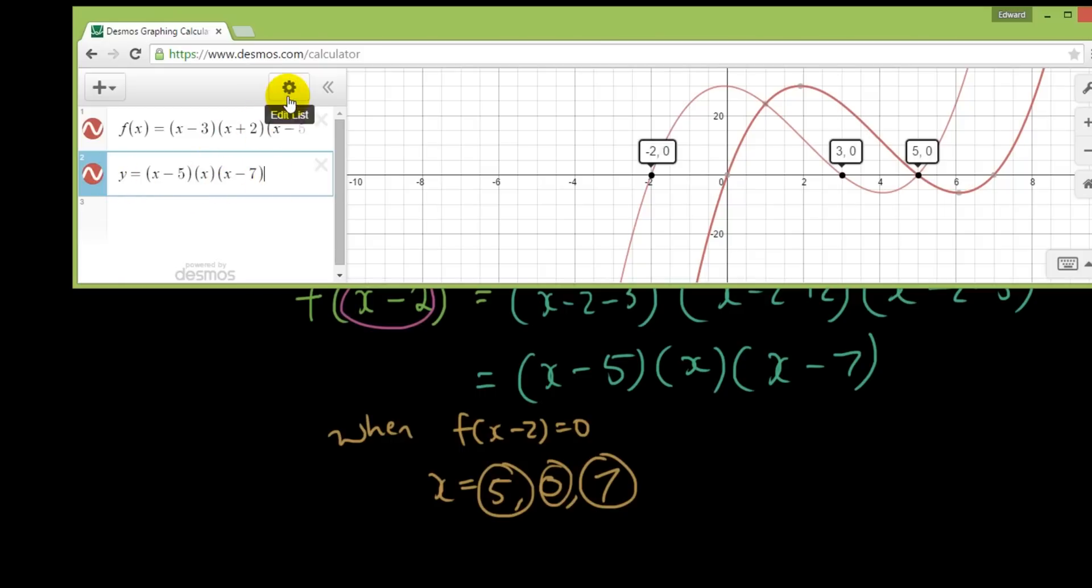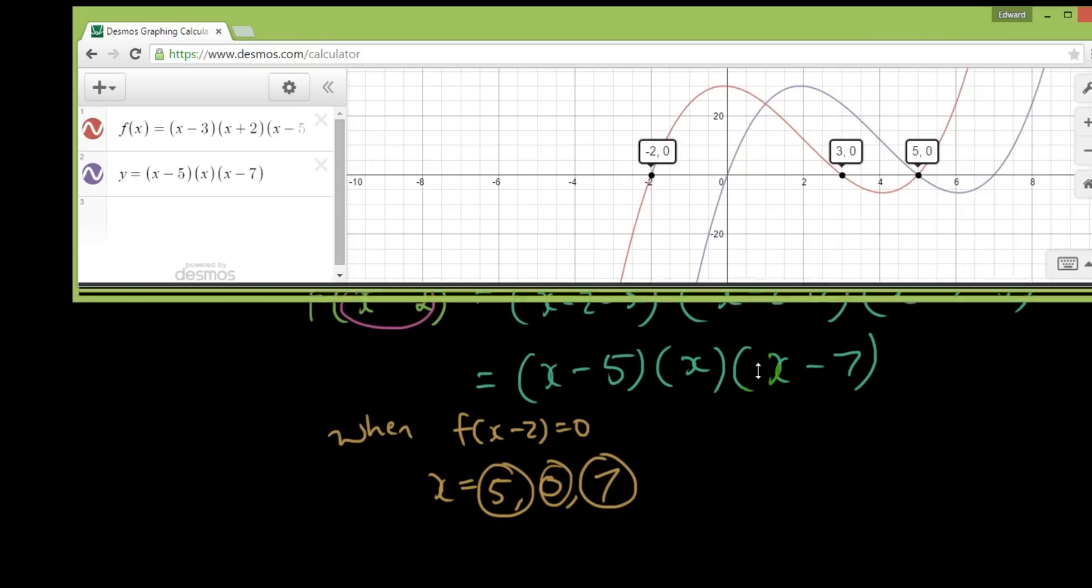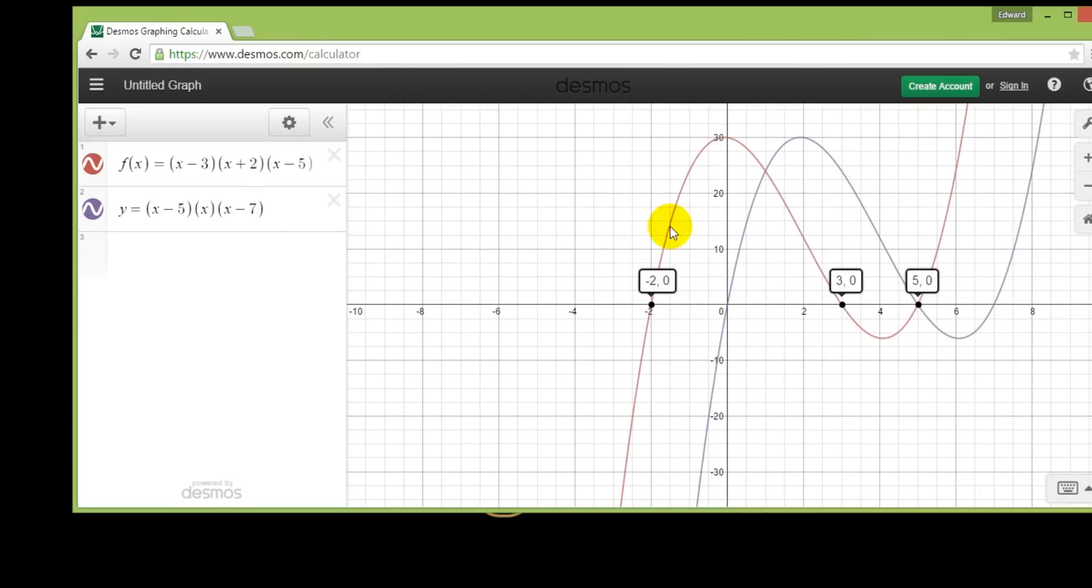Actually let's change the colour of it. So let's change it to purple so you can see the new line. So you can see the purple line is essentially the red line, which is our original equation, moved to the right by 2 units.